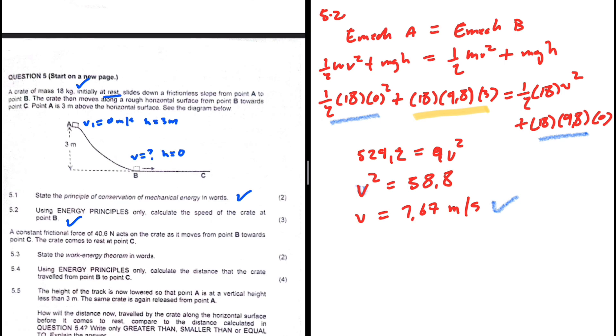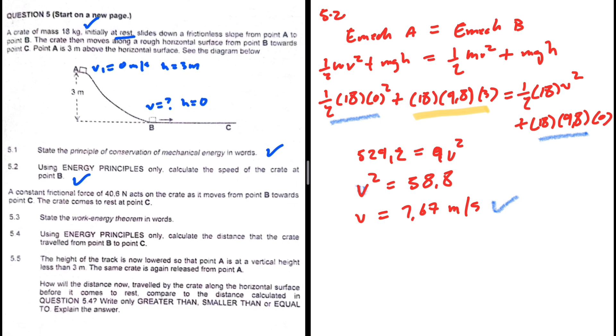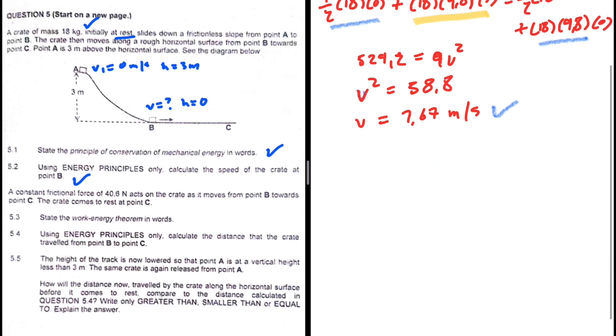We can leave it like that because we are only interested in the magnitude. So there we go, that is the speed at point B. Let's take a look at 5.3. In 5.3 we're supposed to state the work-energy theorem.